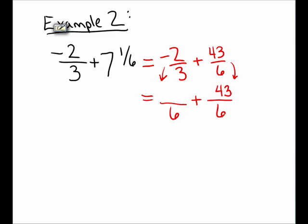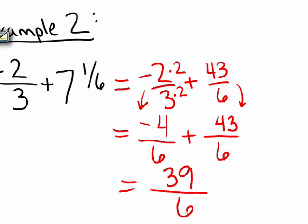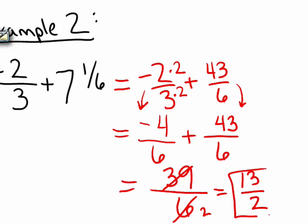It will stay with a denominator of 6. To change the denominator of 3 to a denominator of 6, I multiplied it by 2, so I need to do the same thing to the numerator. I take the fraction negative 2/3, multiply the numerator by 2 to get negative 4, and multiply the denominator by 2 to get 6. Now my fractions have a common denominator, and I can add straight across the top and keep the denominator. 39/6 does simplify: I can pull a 3 out of 39 to get 13, and a 3 out of 6 to get 2. So 39/6 is the same thing as 13/2, and that's our final simplified answer.